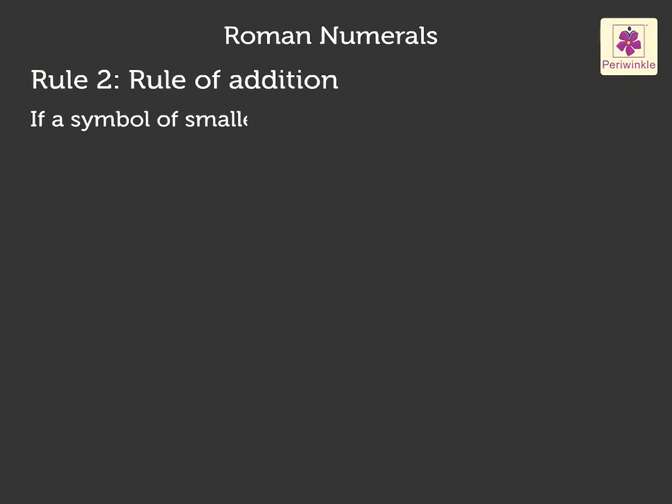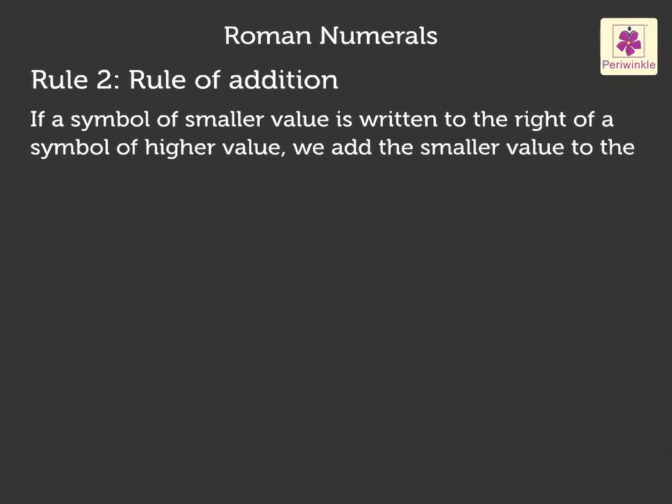If a symbol of smaller value is written to the right of a symbol of higher value, we add the smaller value to the greater value. Let us consider XI. X has a value of 10. I has a value of 1. So, the Hindu Arabic number for this Roman number is 11.